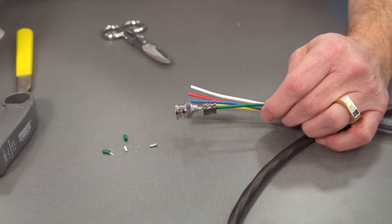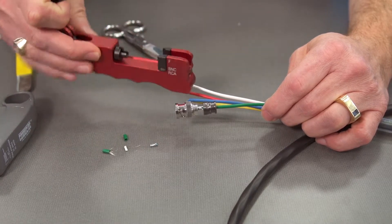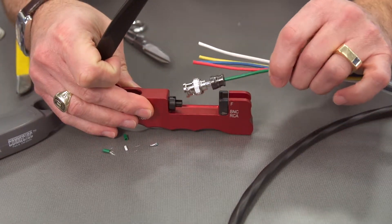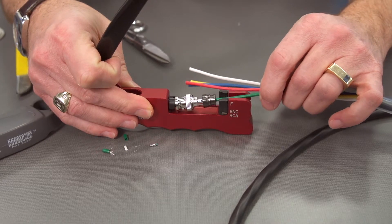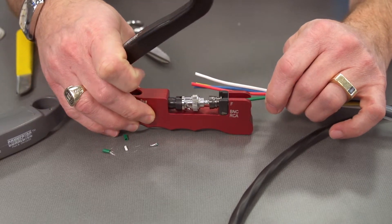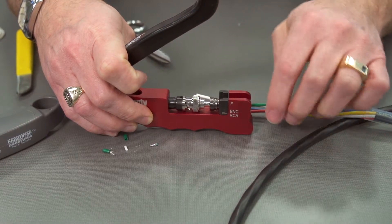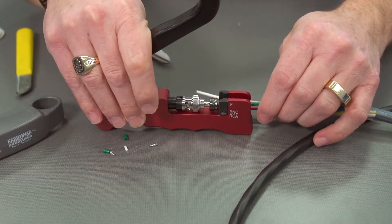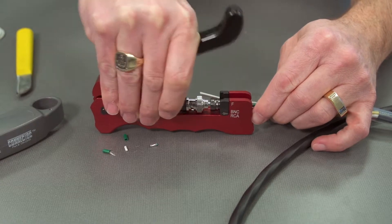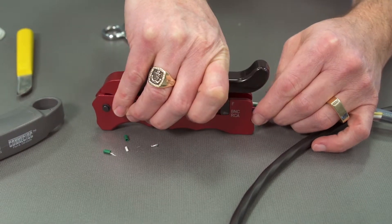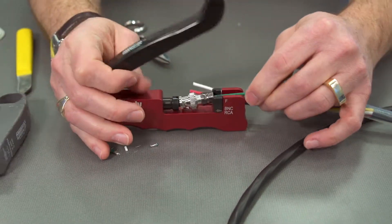So now all we have to do is crimp this down. We'll bring in our anvil and we just merely set this into the front. And then we slowly close this until this is seated. You want to make sure this is seated squarely. If it's not you'll mess up your connector and you'll have to redo it. And now just simply push down. And that connection is complete.